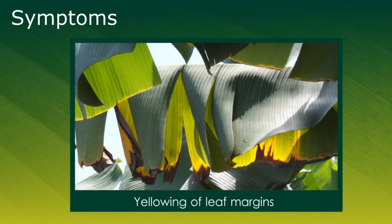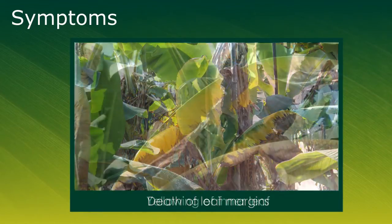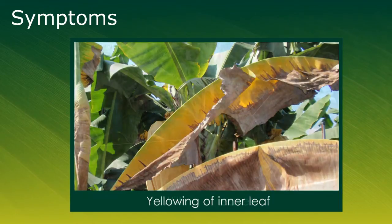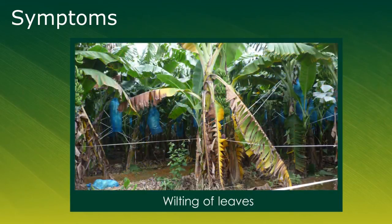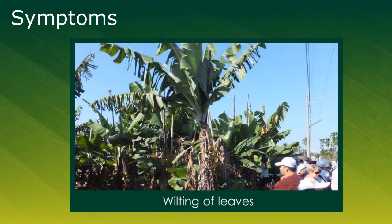Early symptoms of the disease typically include yellowing of the leaf margins, particularly in older leaves. This eventually leads to the death of the leaf margins, while the yellowing will continue further into the leaf.